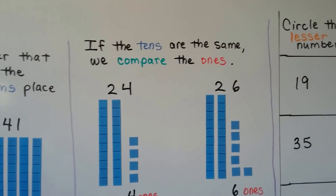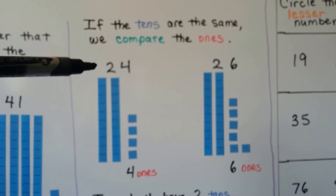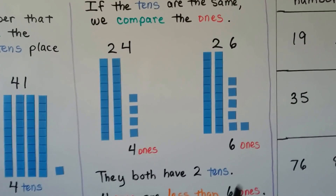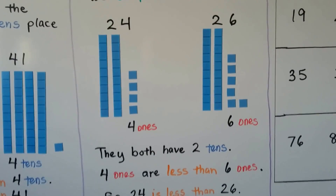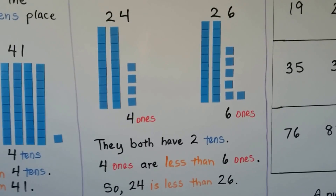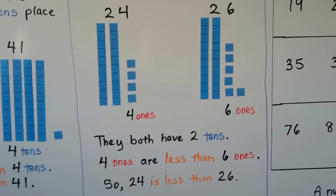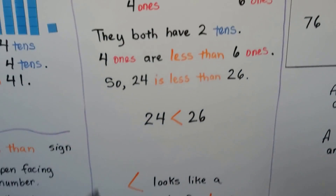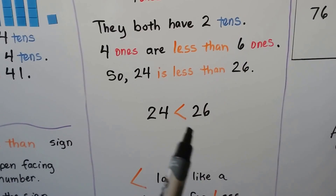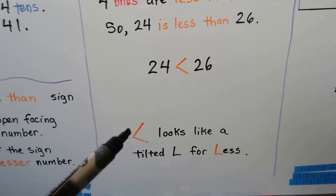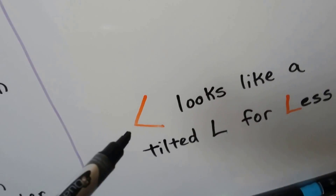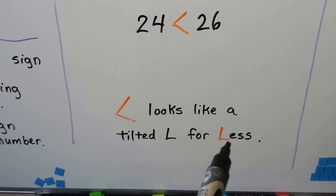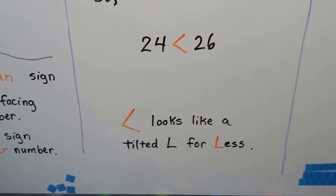If the tens are the same, we compare the ones. We have twenty-four and twenty-six. This one has four ones, this one has six ones — they both have two tens. Four ones are less than six ones, so twenty-four is less than twenty-six. And if you look at the less than sign, it kind of looks like a tilted L — you can think L for less. That way you can tell it from the greater than sign.